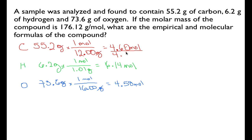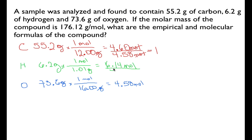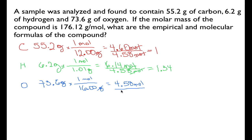Dividing 4.60 by 4.58 gives us just about 1 — the moles cancel and it's a unitless number. For hydrogen, 6.14 divided by 4.58 gives us 1.34. And for oxygen, 4.58 divided by 4.58 gives us 1.